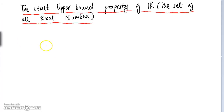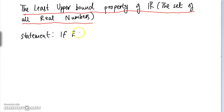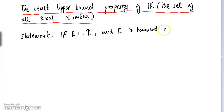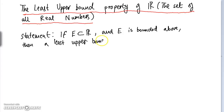So what is the least upper bound property of the real numbers? The statement says that if E is a subset of the real numbers and E is bounded above, then a least upper bound of E exists.